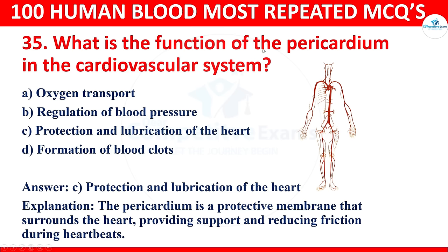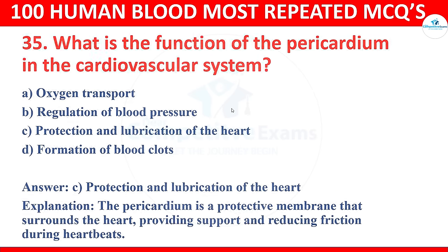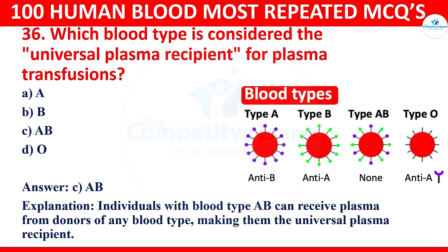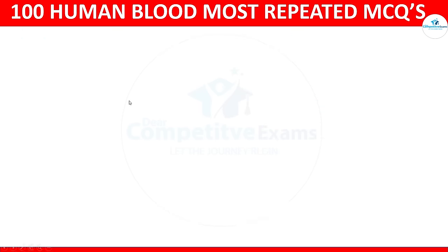Question 36: Which blood type is considered the universal plasma recipient for plasma transfusions? Options: A, B, AB, or O. The correct answer is AB. Individuals with blood type AB can receive plasma from donors of any blood type, making them the universal plasma recipient.